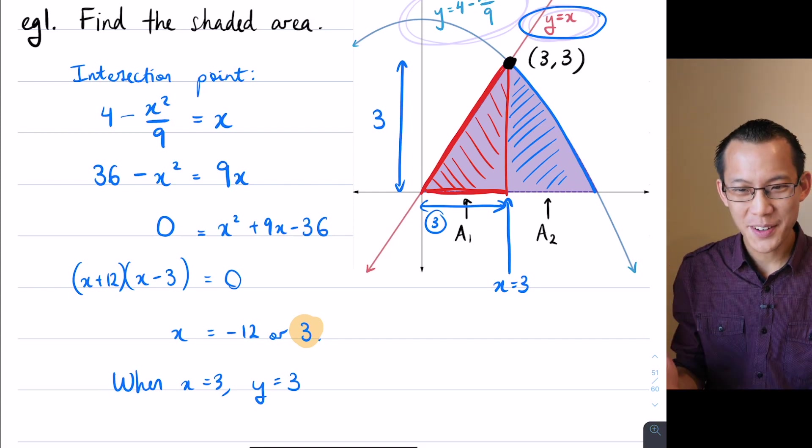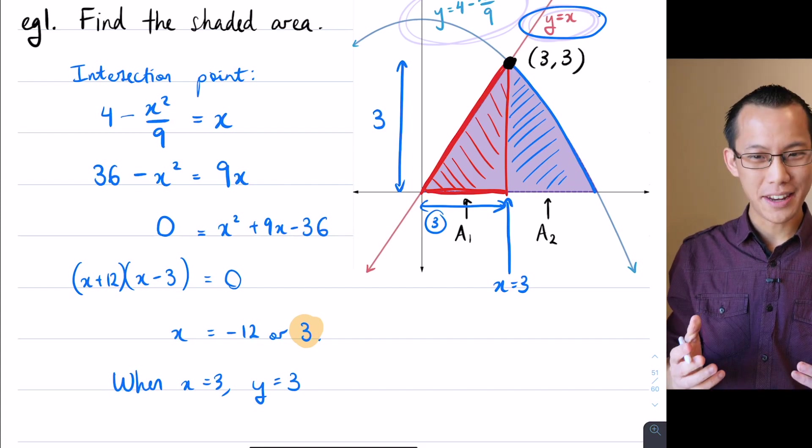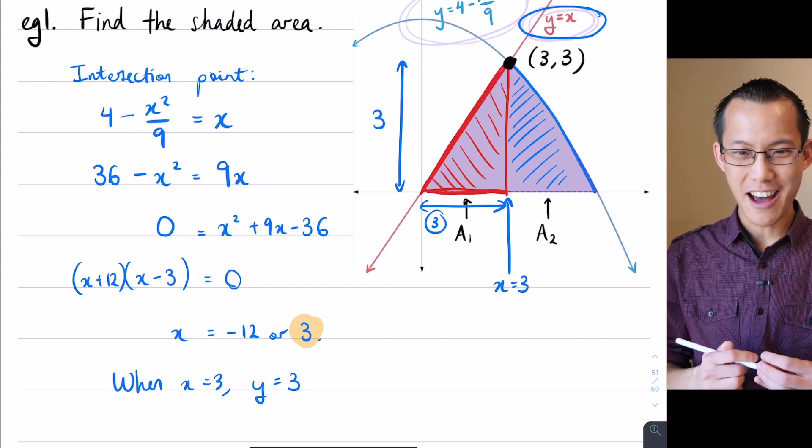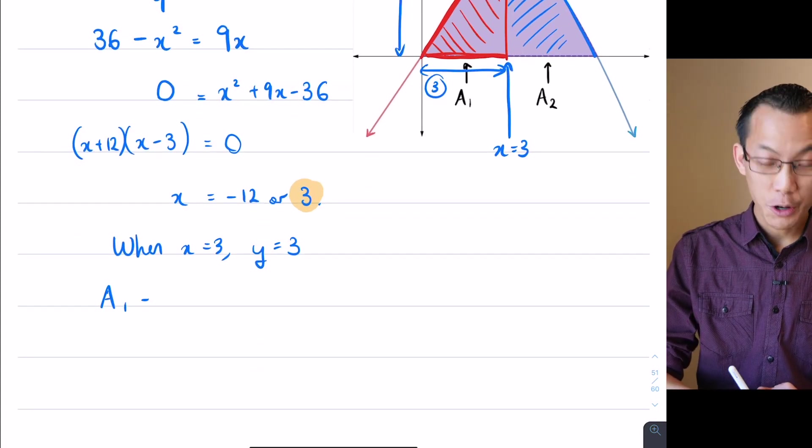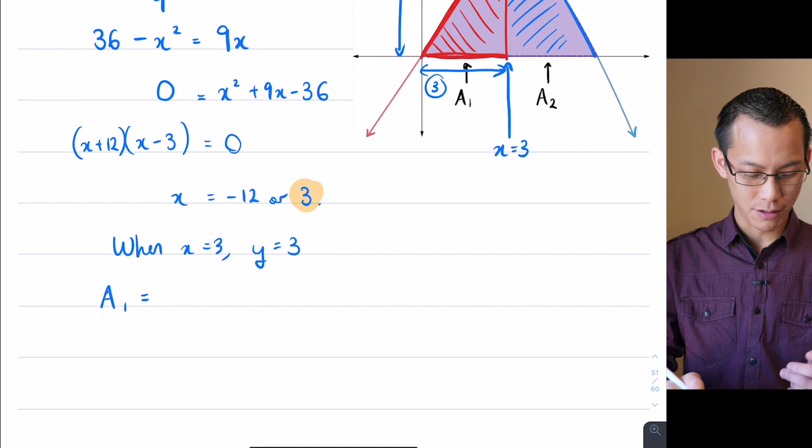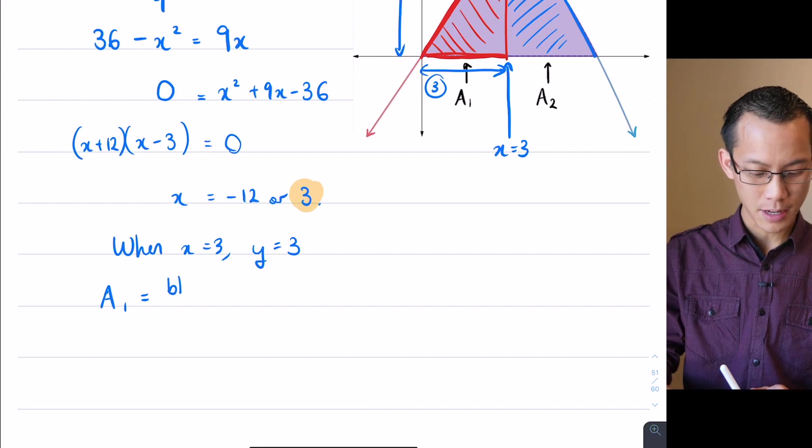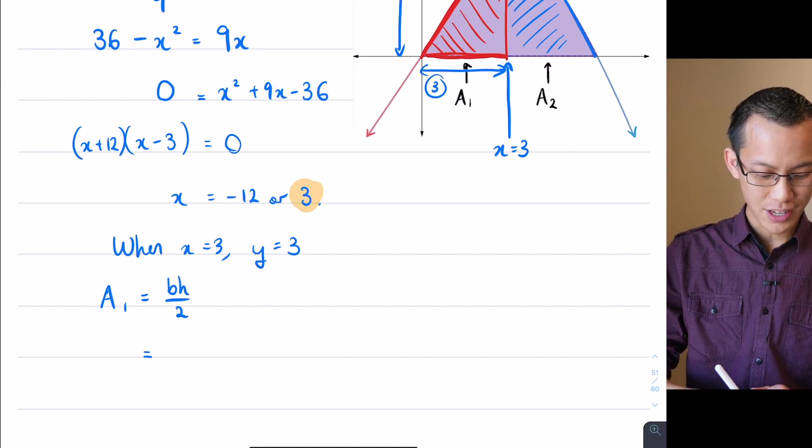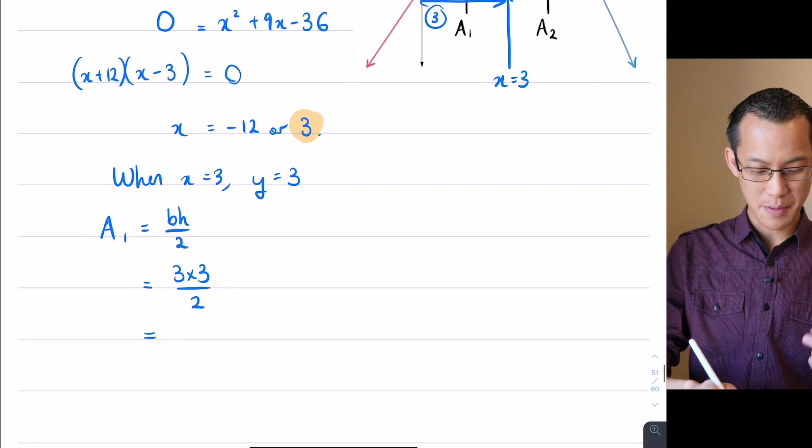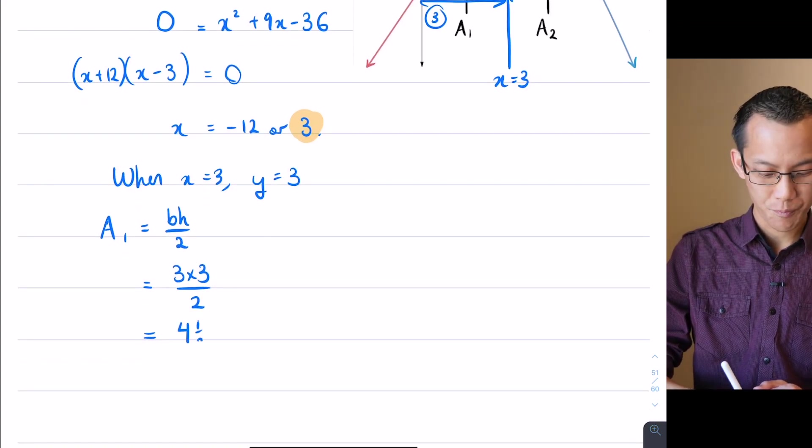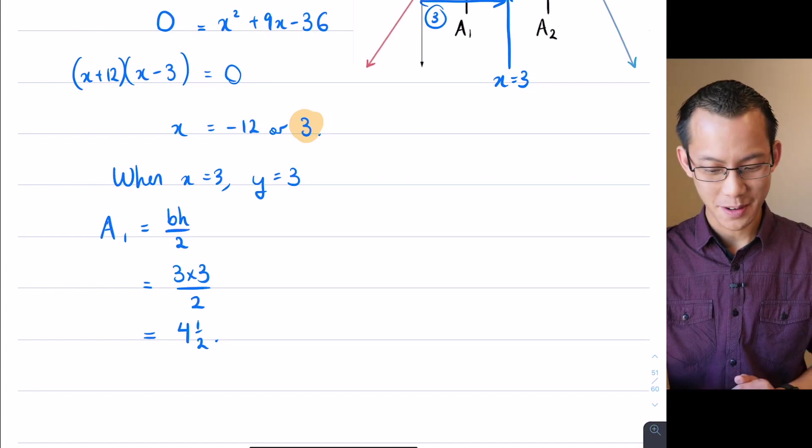Okay, so now I've got a height, I've got a width, a base, I should have said. Now I'm ready to calculate this area. So A1, I could have worked it out with an integral, but I don't need to. I can just say it's base times height over 2, which is, in this case, 3 times 3 over 2, 9 over 2, that's going to be 4 and a half. Done. So there's A1, okay?